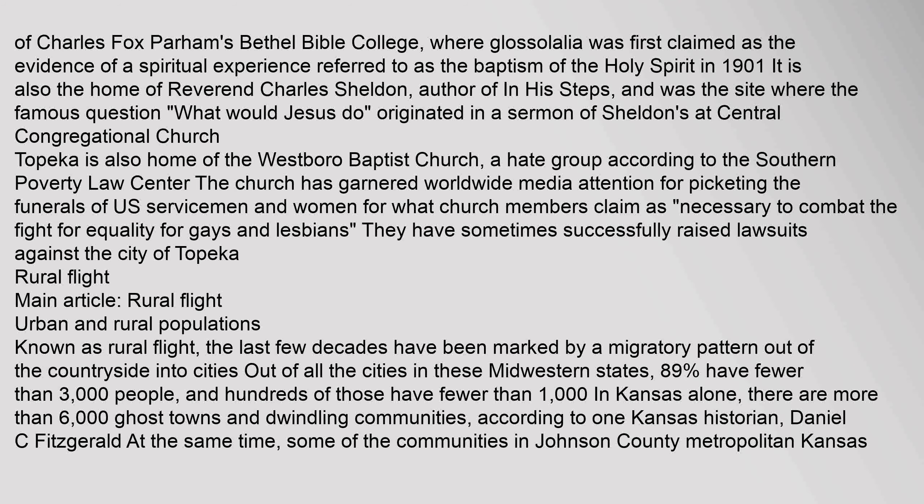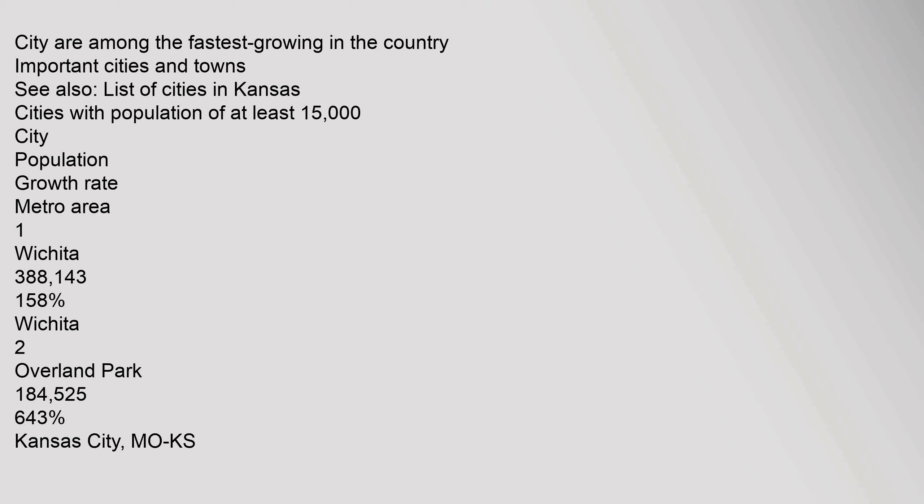The last few decades have been marked by a migratory pattern known as Rural Flight — out of the countryside into cities. Of all the cities in these Midwestern states, 89% have fewer than 3,000 people, and hundreds of those have fewer than 1,000. In Kansas alone there are more than 6,000 ghost towns and dwindling communities, according to historian Daniel C. Fitzgerald. At the same time, some communities in Johnson County in the Metropolitan Kansas City area are among the fastest-growing in the country.